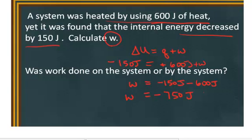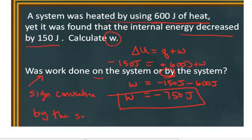And so the final question is, was work done on the system or by the system in this particular change? And to answer this question, you need to remember the sign convention that when work is negative, that means that work was done by the system. So in this case, work was done by the system. You should try some problems on your own now.